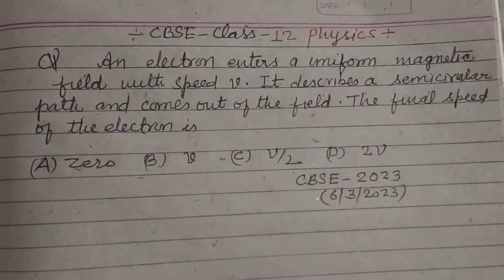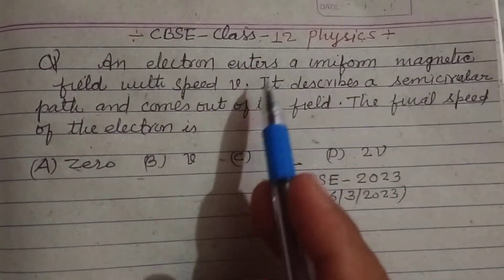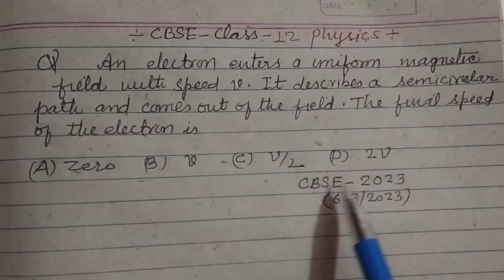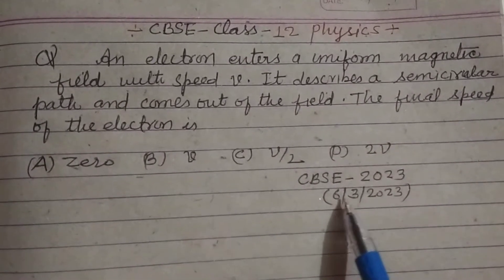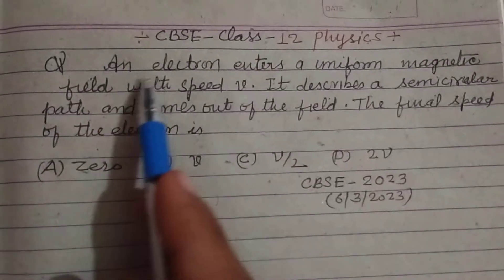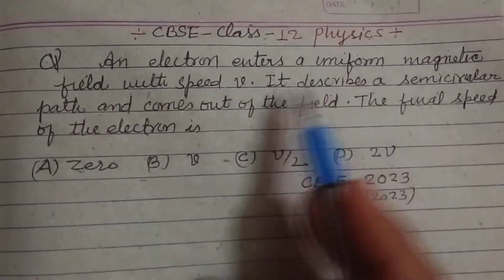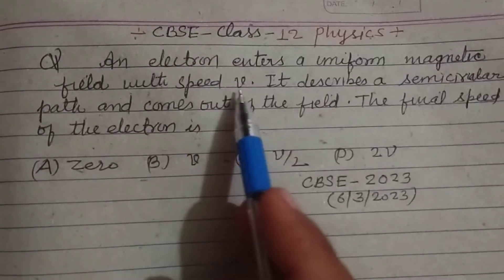Hello students, and welcome to this YouTube channel. CBSE Class 12 Physics question from CBSE board exam 2023 held on 6 March 2023: An electron enters a uniform magnetic field with speed v.